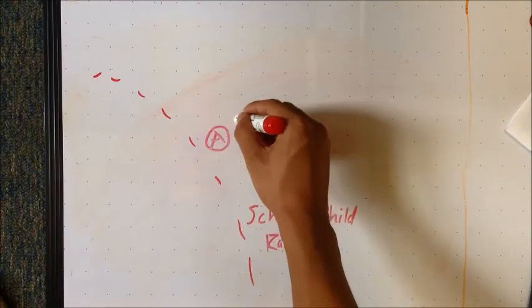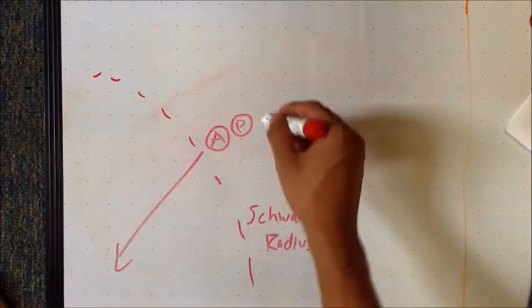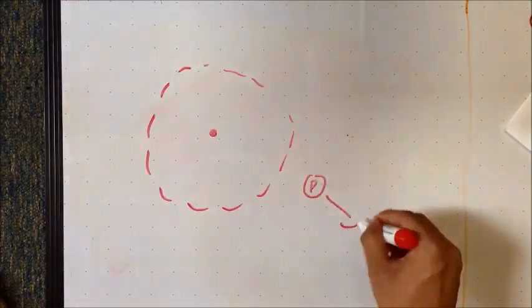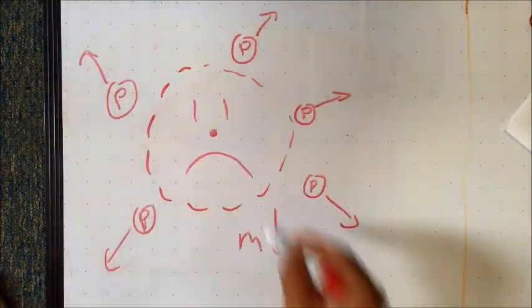These pairs usually annihilate each other. However, right outside the event horizon, the antiparticle is instead pulled towards the black hole while the particle escapes. Through this process, a black hole evaporates and loses mass over time.